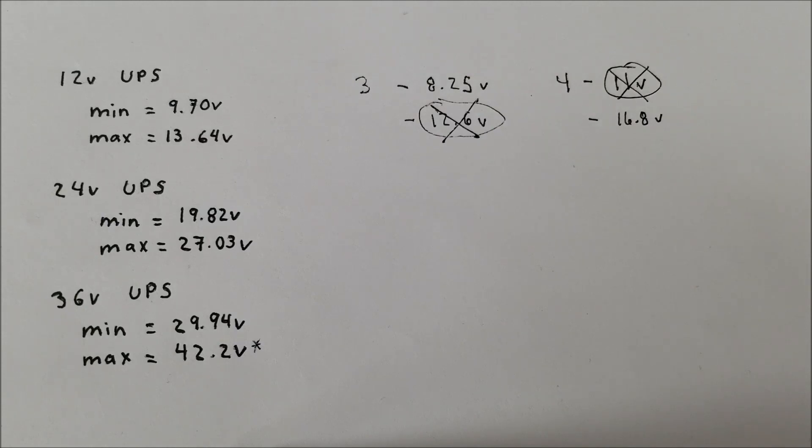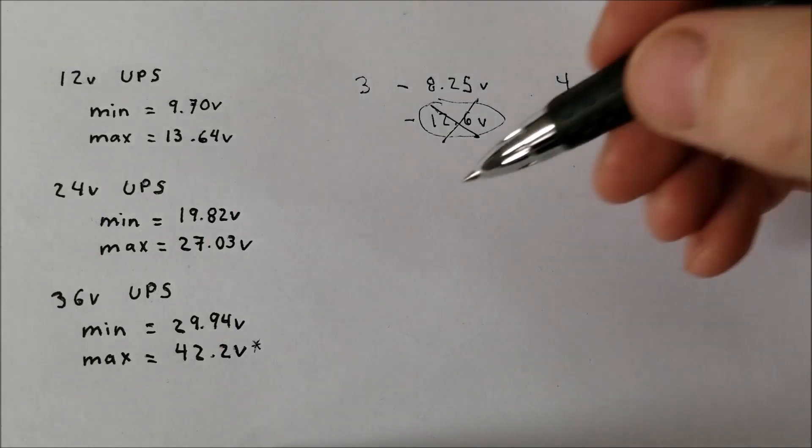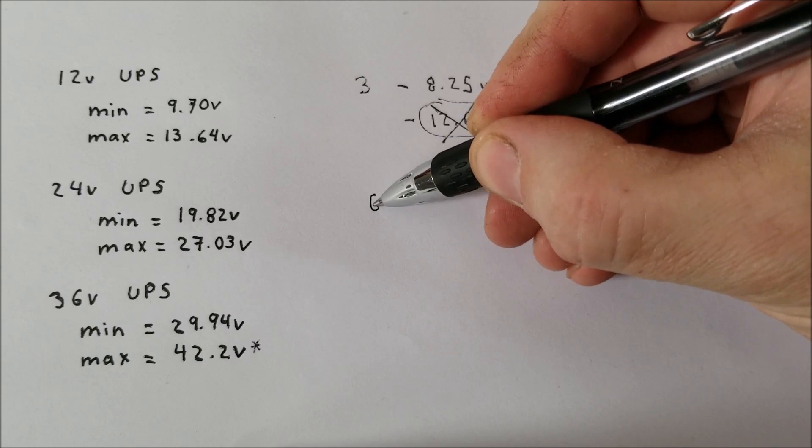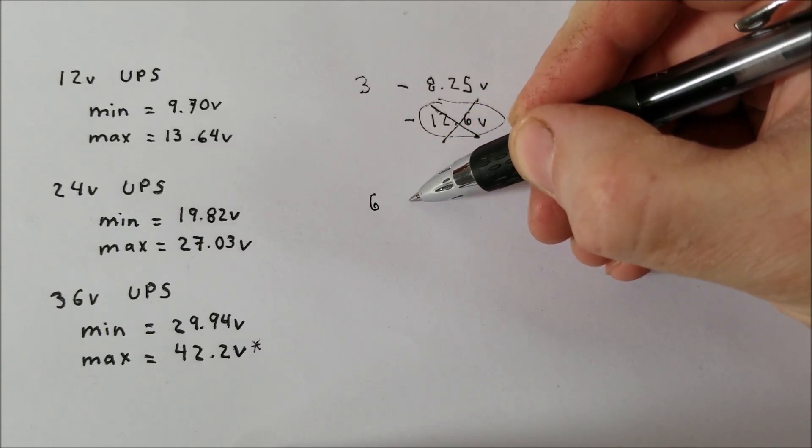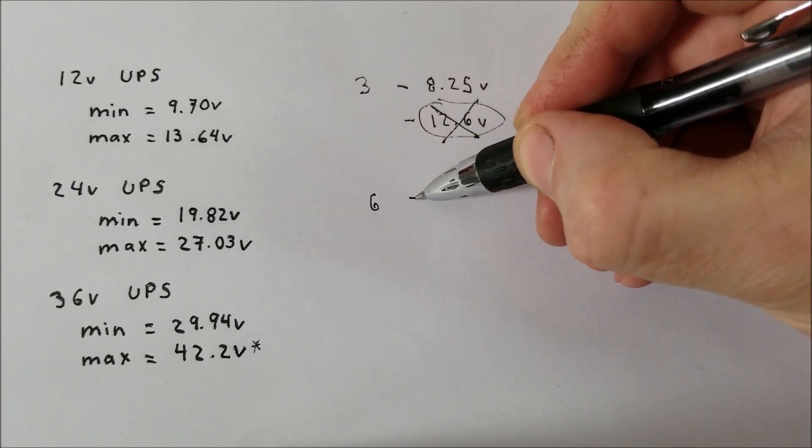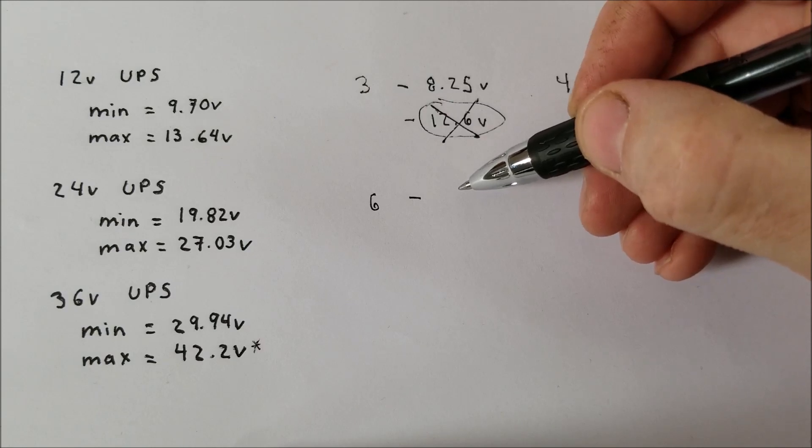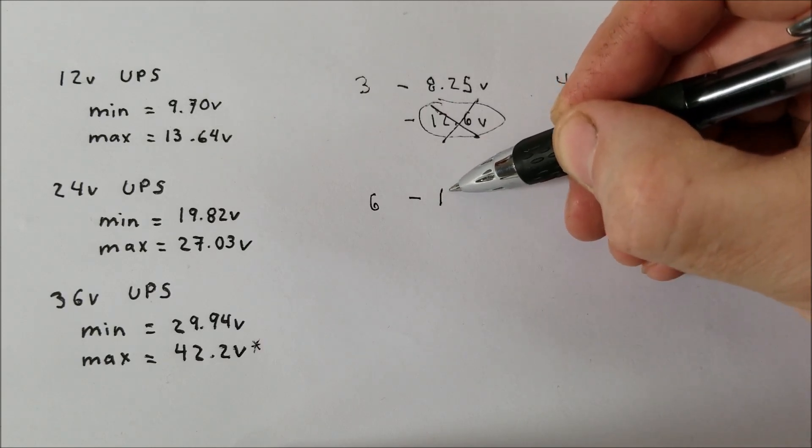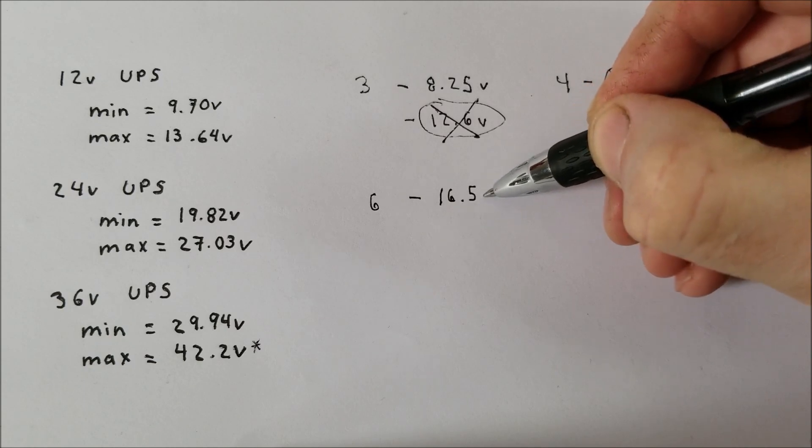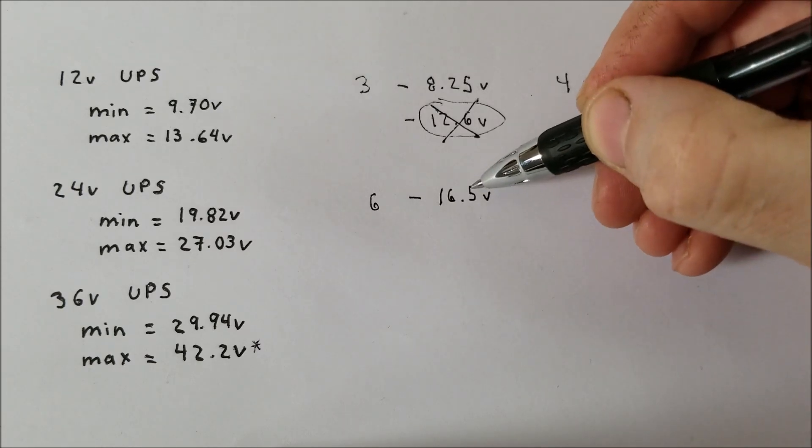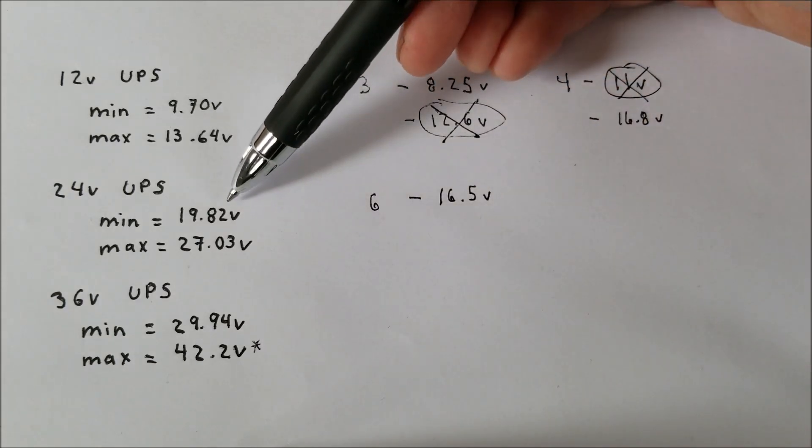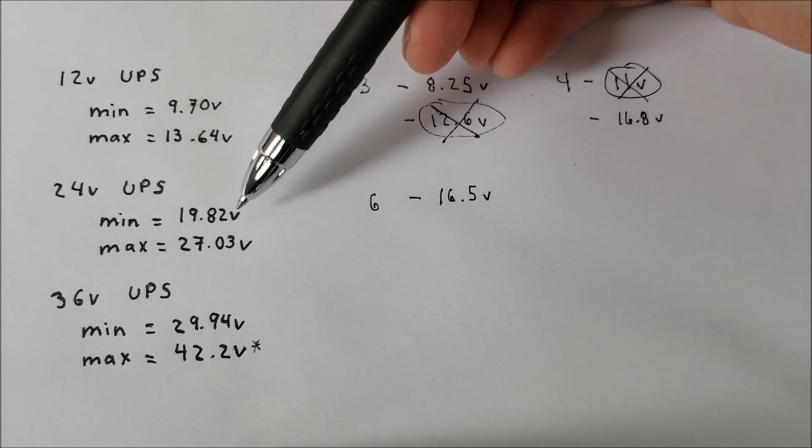Now if we move on to the 24V UPS. So if we start with 6 cells in series and we multiply that by 2.75V, we get 16.5V. So that's safely below the minimum voltage of the UPS. So this would be fine.